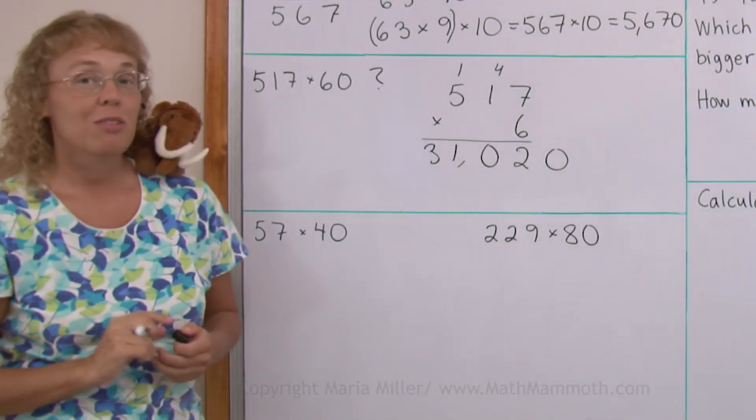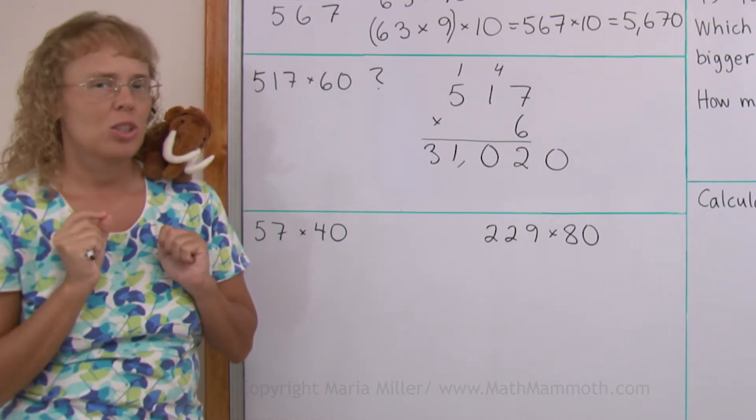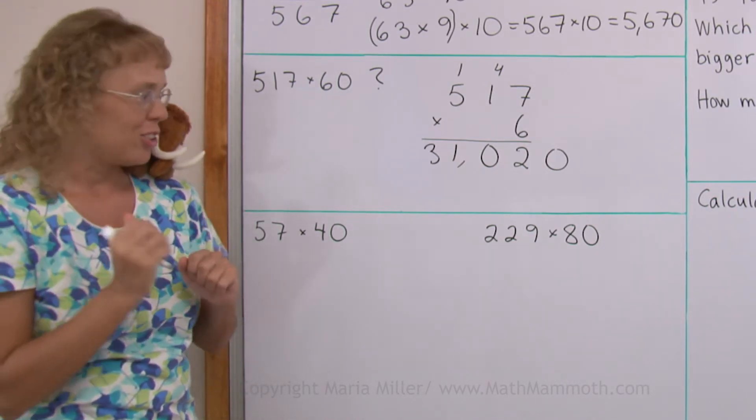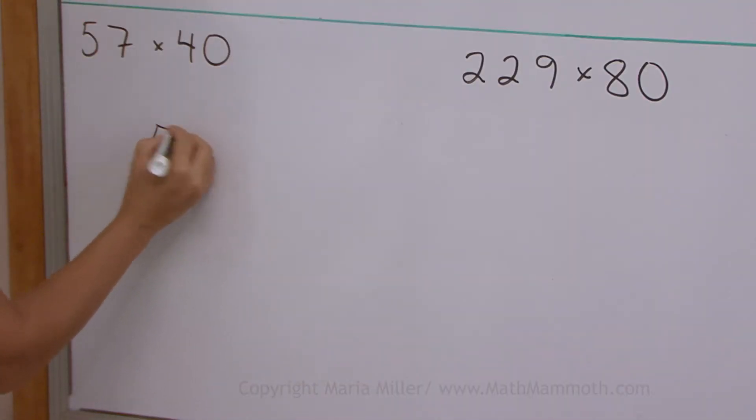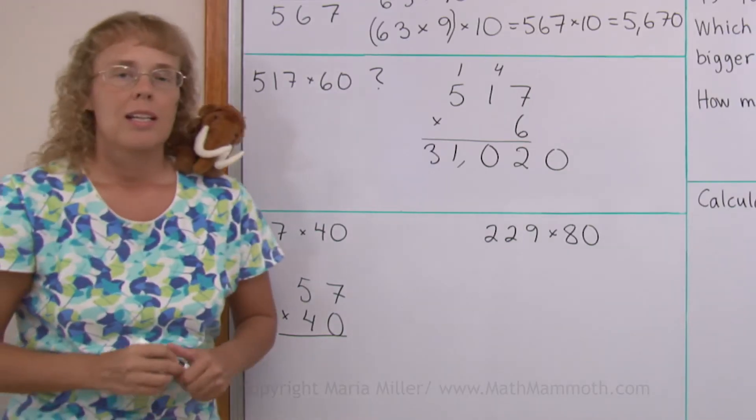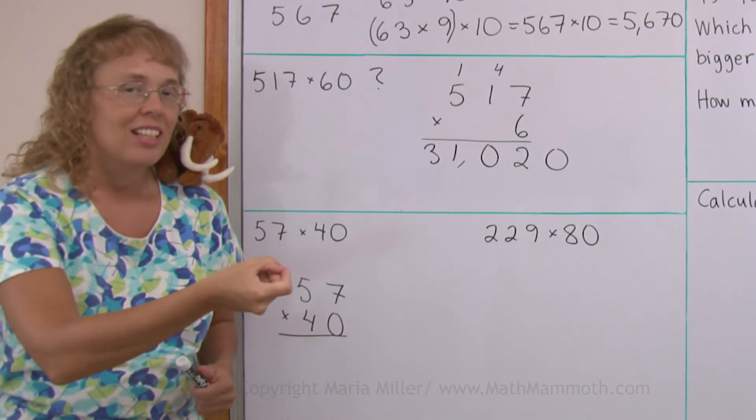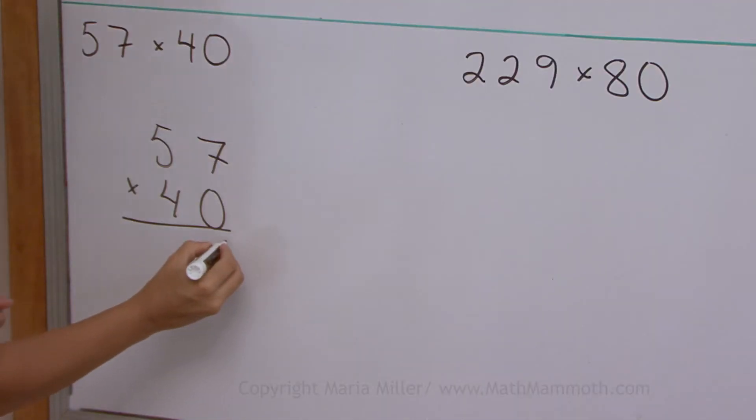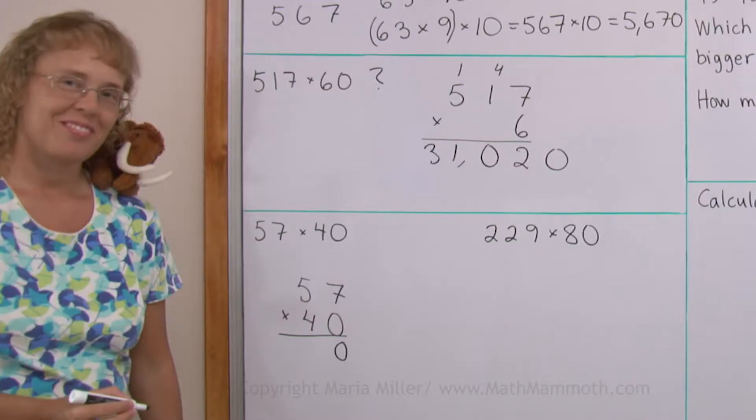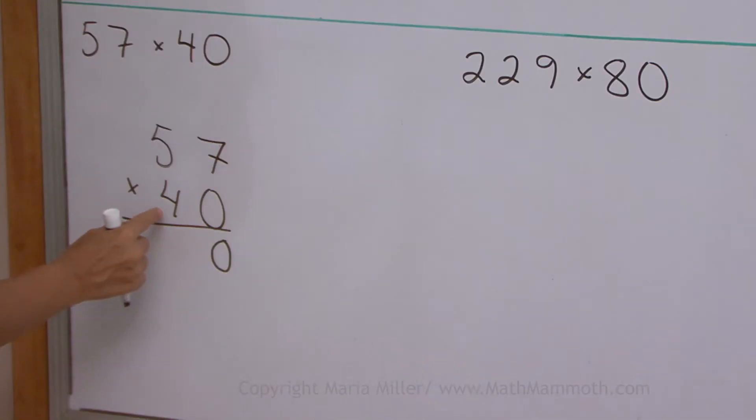Over here, we're going to do the same, but just a little bit differently. So observe. This time I'm going to write 57 times 40 instead of times 4. But since I know that in the end I'm going to tag a zero, then I'm going to actually put a zero in the end of the number at first. And then I'm going to multiply 4 times 57, kind of ignoring this zero. I imagine it's not there and I multiply 4 times 7, 4 times 50.